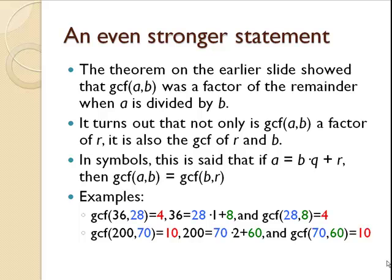An even stronger statement is that the greatest common factor of a and b is not only a factor of the remainder r, it's the greatest common factor of r and b, the divisor. In symbols, we say that if a equals b times q plus r, then the greatest common factor of a and b is the greatest common factor of b and r.